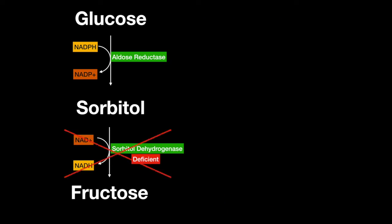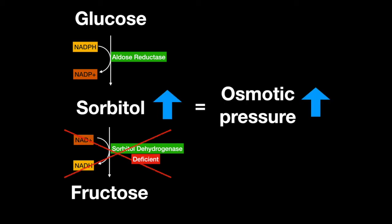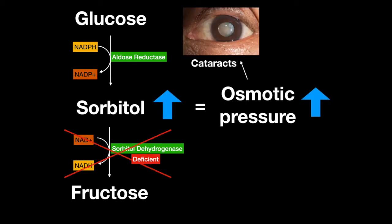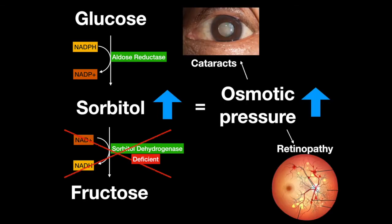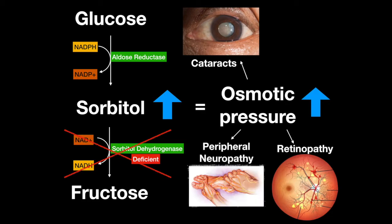Tissues that lack sorbitol dehydrogenase will accumulate sorbitol, increasing the osmotic pressure, causing damage resulting in cataracts, retinopathy, and peripheral neuropathy. Chronic hyperglycemia in patients with diabetes may experience this.